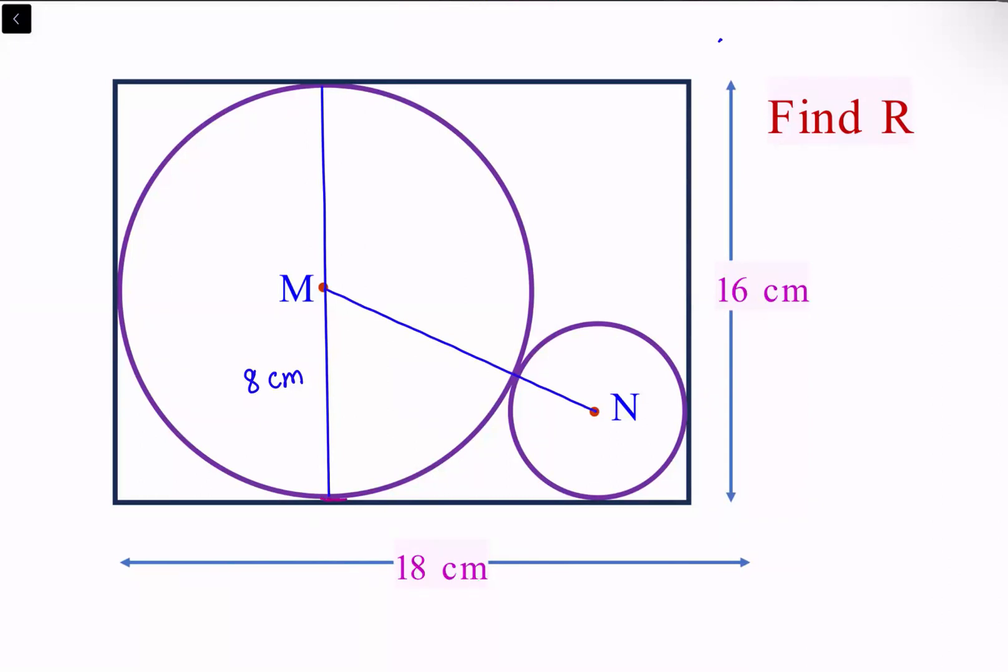Now from N I'm dropping a perpendicular onto MP. Let's call this point Q, so this angle is 90 degrees. What's left is to find the sides of this particular triangle and then apply Pythagoras theorem.